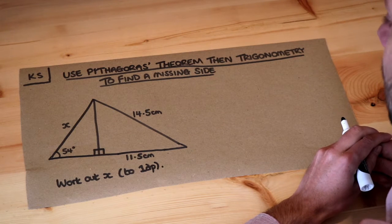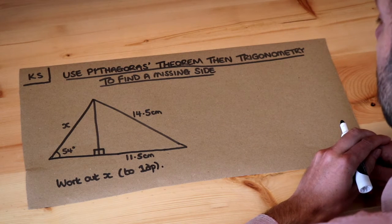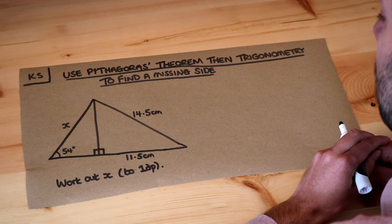Hello and welcome to this Dr Ross Maths key skill video on using Pythagoras' theorem then trigonometry to find a missing side.